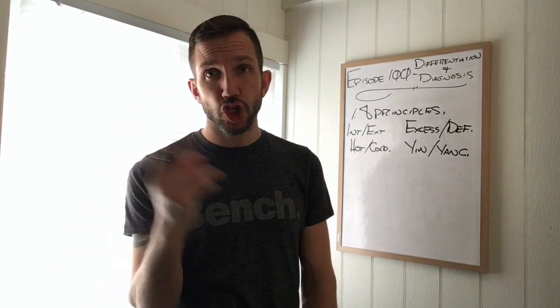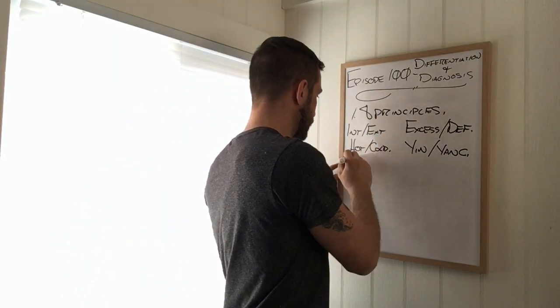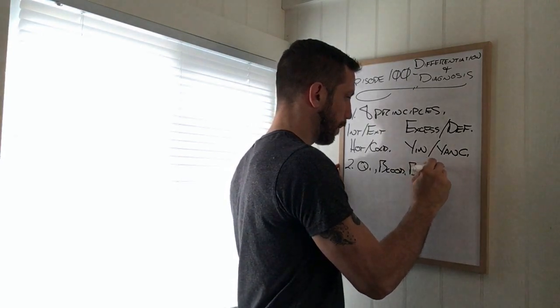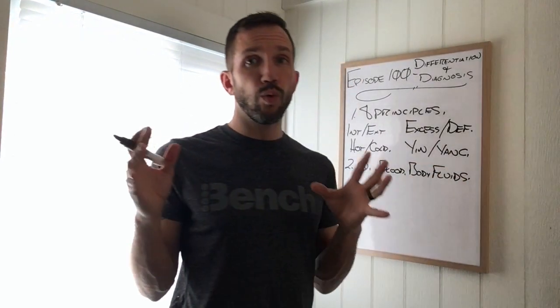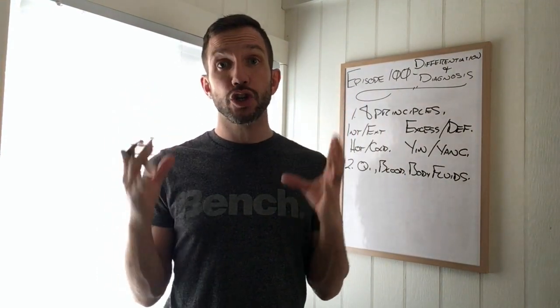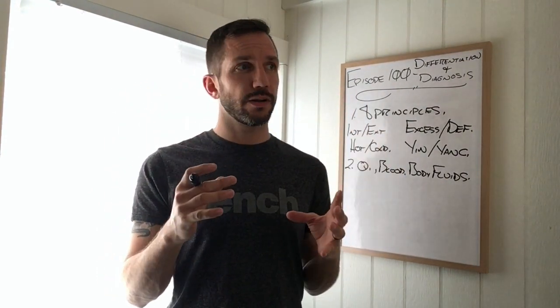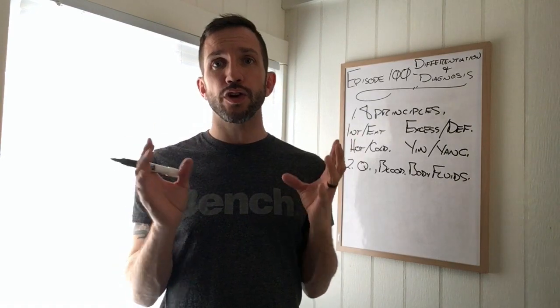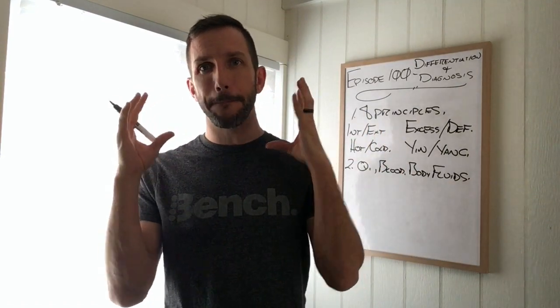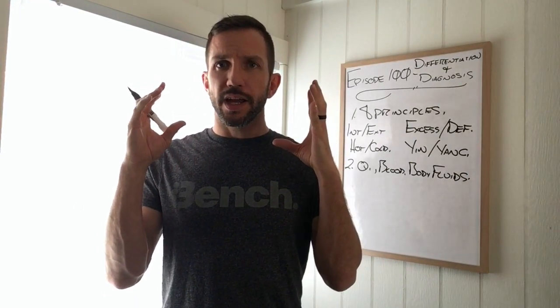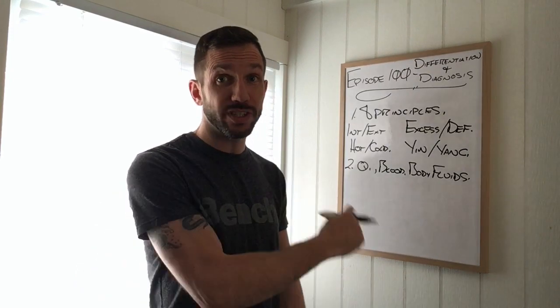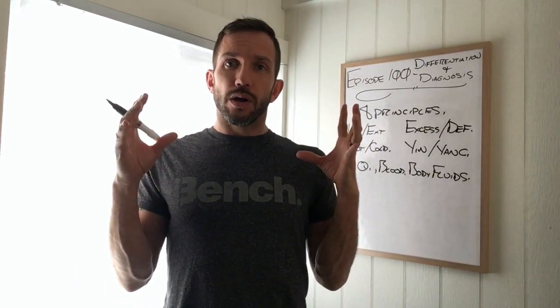The next step, step two, is Qi, blood, and body fluids. We have to remember our terminology. Certain words such as deficiency, stagnation, and heat go together with other terms. For example, we can say Qi deficiency and we can say blood deficiency. We can say heat in the blood, but we can't say heat in the Qi. We have to memorize these concepts, especially when it gets to the Zong Fu diagnosis, which is actually number three.